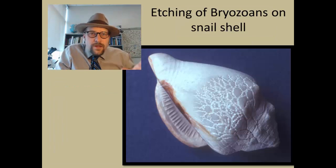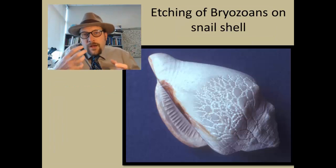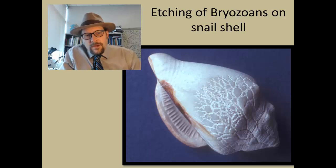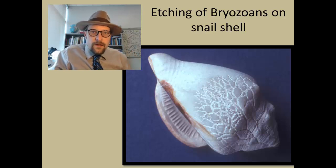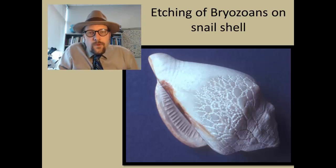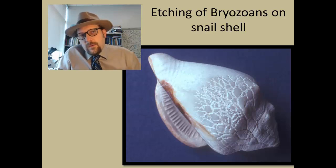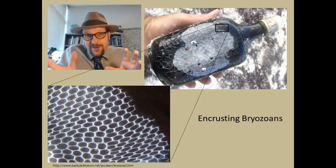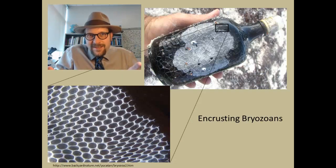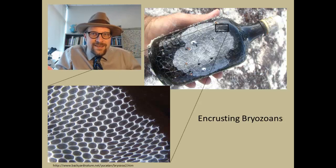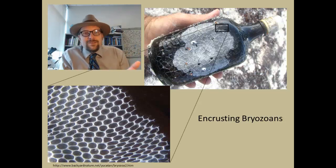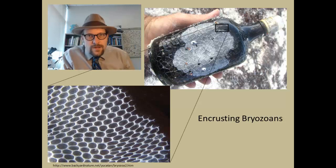Evidence of bryozoans are really common in the fossil record because they can also etch into other shelled organisms, such as this example of a snail shell, where you see those little holes, those little pits, those are formed by encrusting bryozoans. Bryozoans can even encrust on trash that is left in the ocean. This encrusting nature of bryozoans means that we have an excellent fossil record since they readily grow on hard substrates and other organisms, and they leave behind these hard skeletons of calcite.